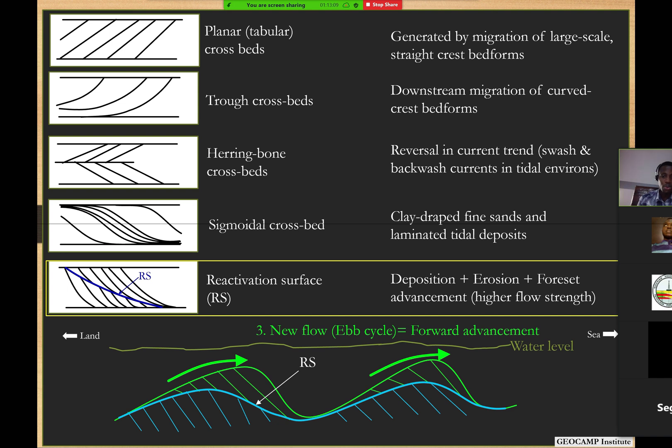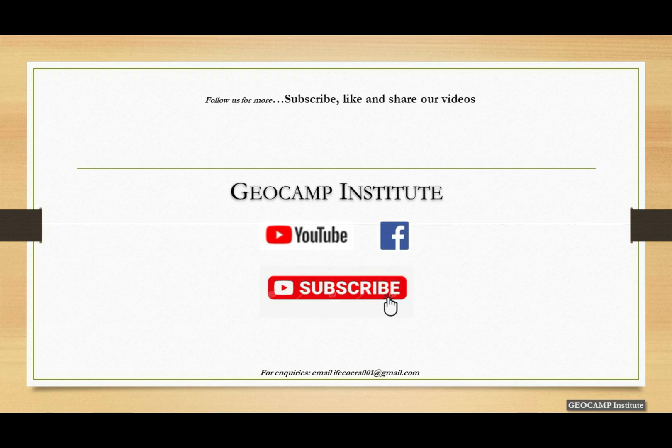When the energy and velocity is low, what you have is more of the fines or the muddy components settling down quietly. Then when the energy or when the rate at which the tide is rising or falling picks up again, it carries more of coarser materials and puts them on top of what was originally muddy from the earlier quiet phase. Is that clear enough? Yes, sir. All right, great.